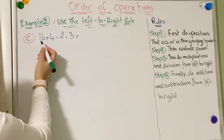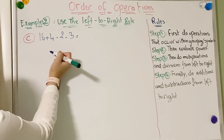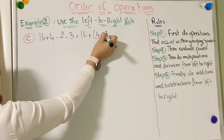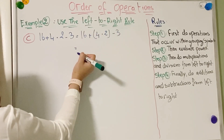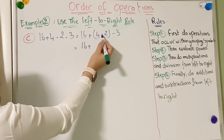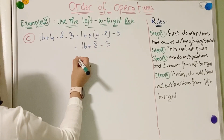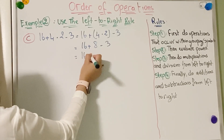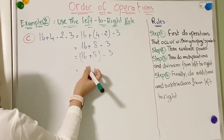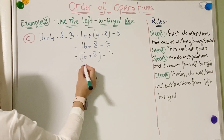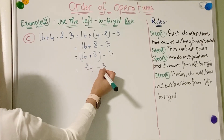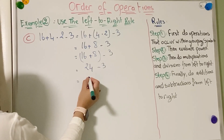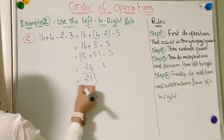Next example: 16 + 4 × 2 − 3. We start with multiplication first: 4 × 2 = 8. Now working left to right, we have 16 + 8 − 3. We add 16 + 8 = 24, then subtract 3 from 24 to get 21.